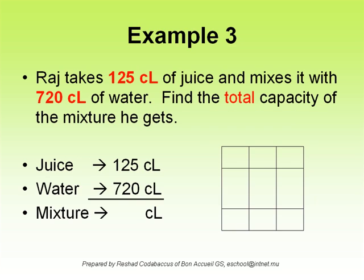Example 3: Raj takes 125 centiliters of juice and mixes it with 720 centiliters of water. Find the total capacity of the mixture he gets.